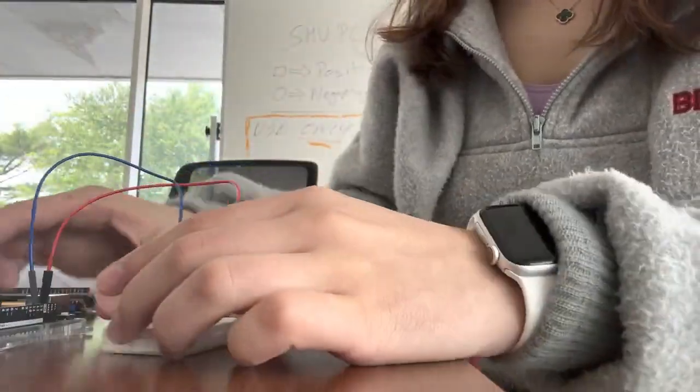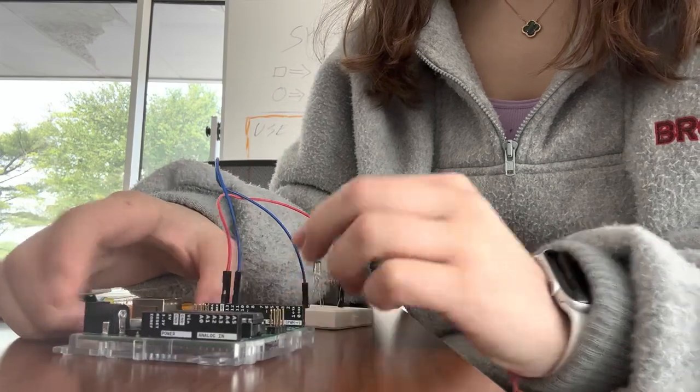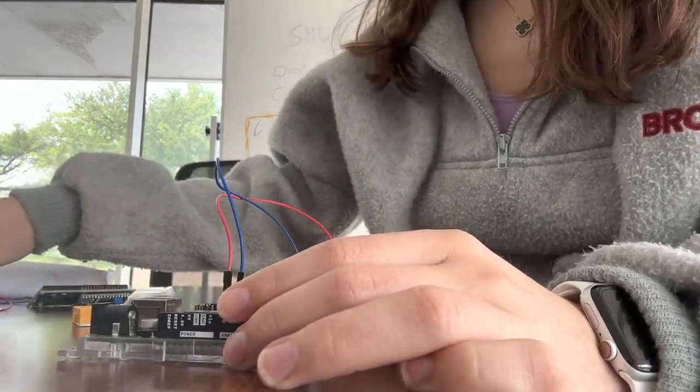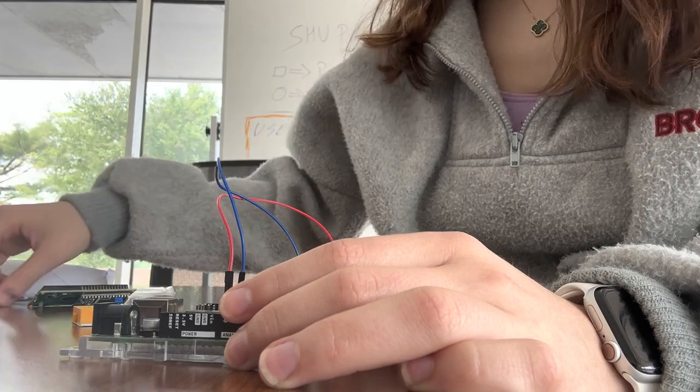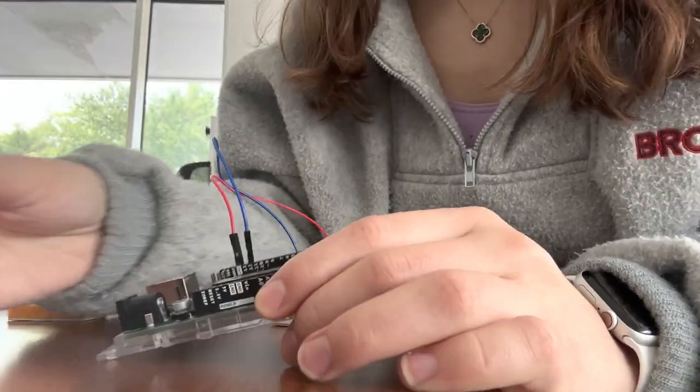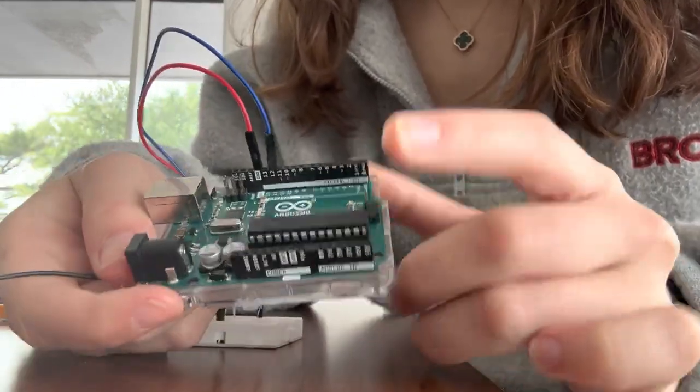Now, to build the receiver, you want to take your Arduino, you now get another wire, and connect it to the five voltage port.